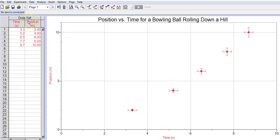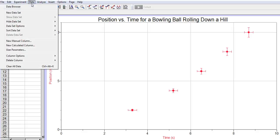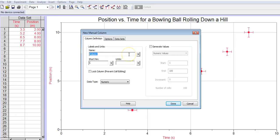Then I'm going to go over here to data set. Under data, I'm going to create a new data set, just a new manual column. Now that column is going to be time squared. Short is time raised to the power of 2. The units are seconds raised to the power of 2.